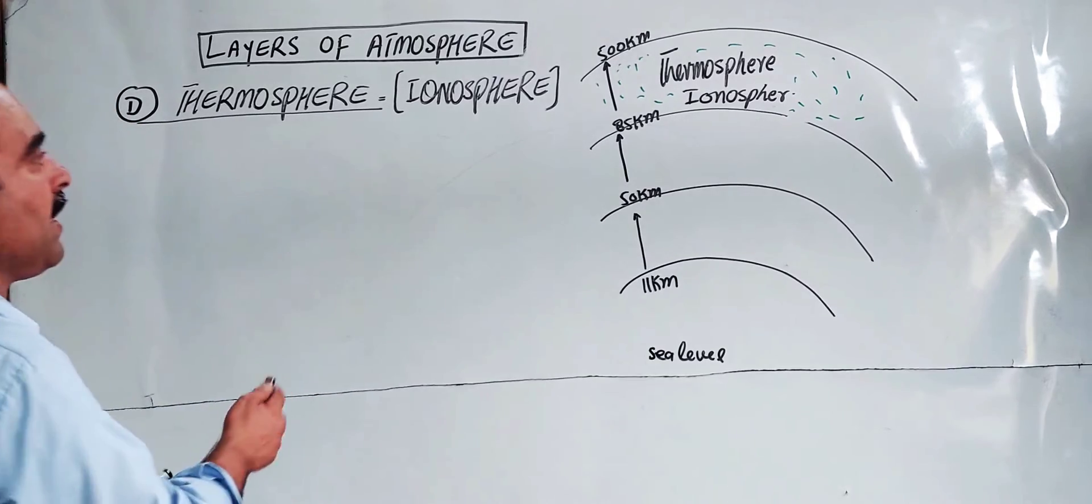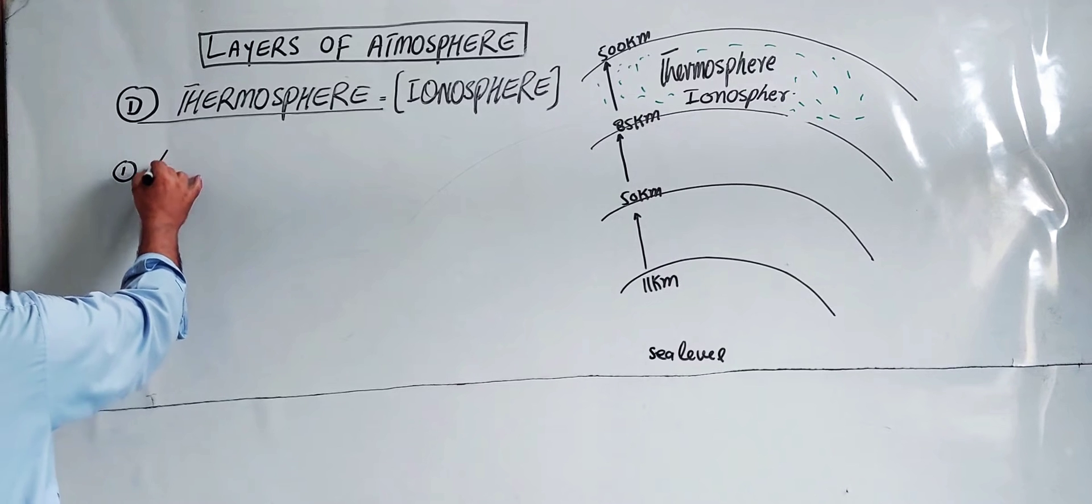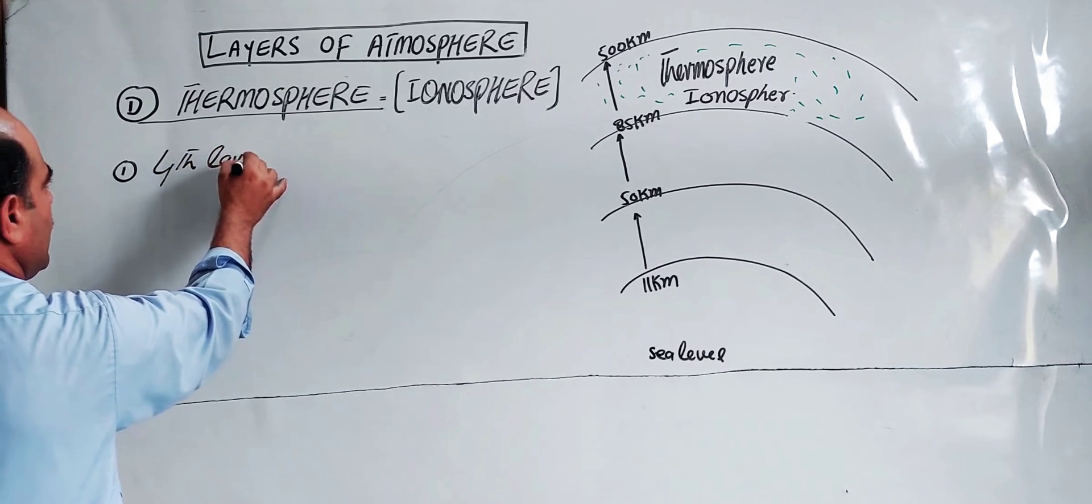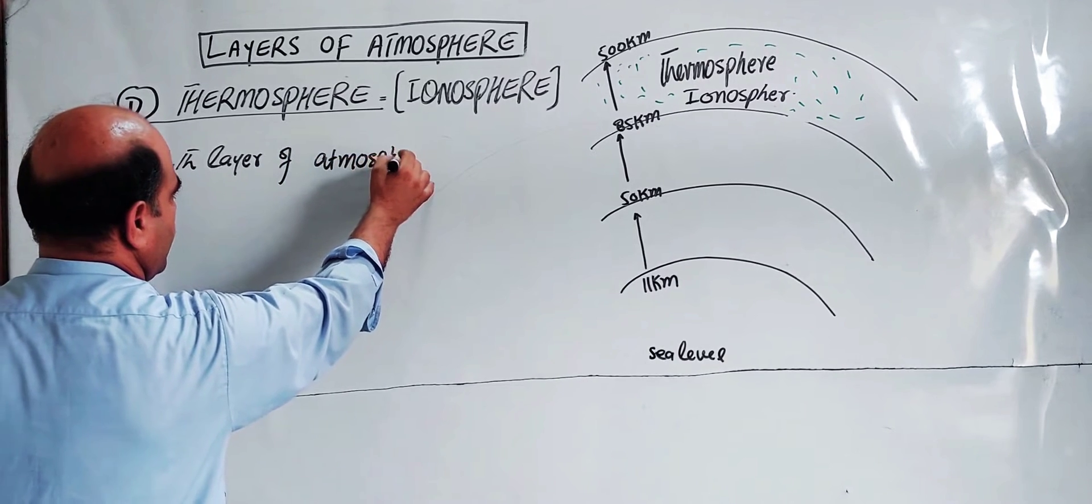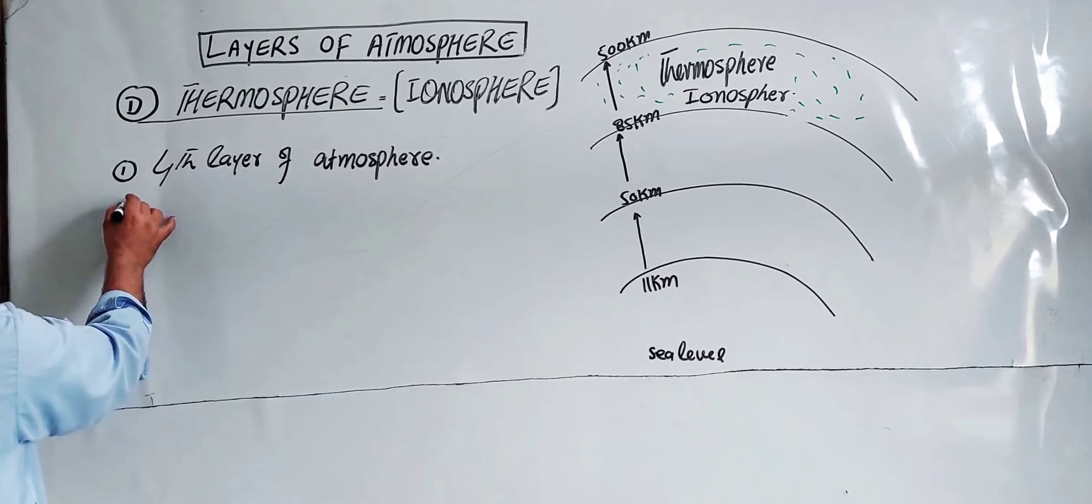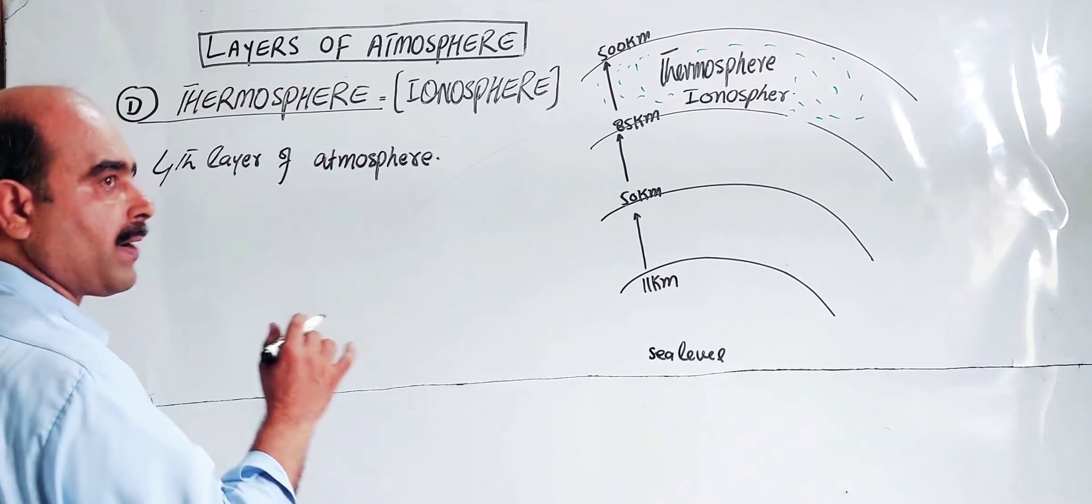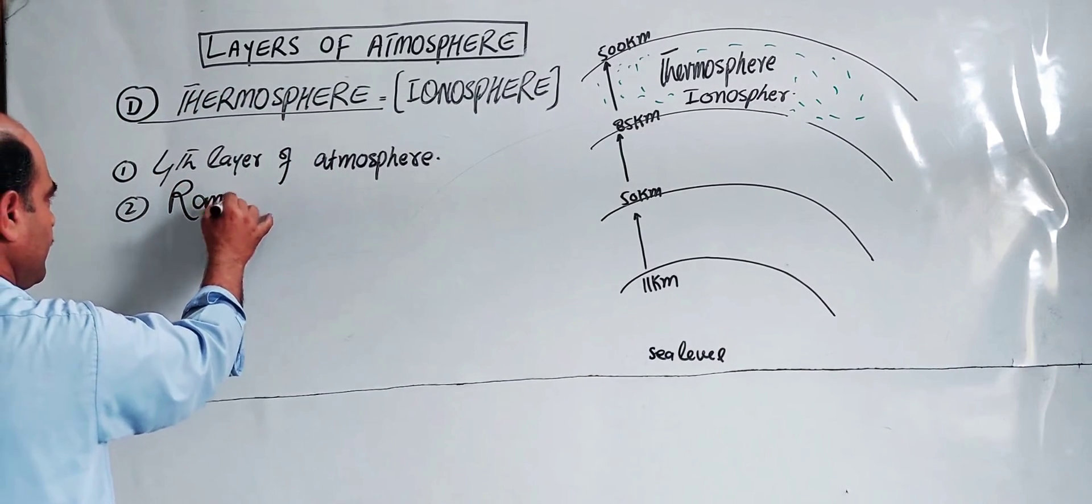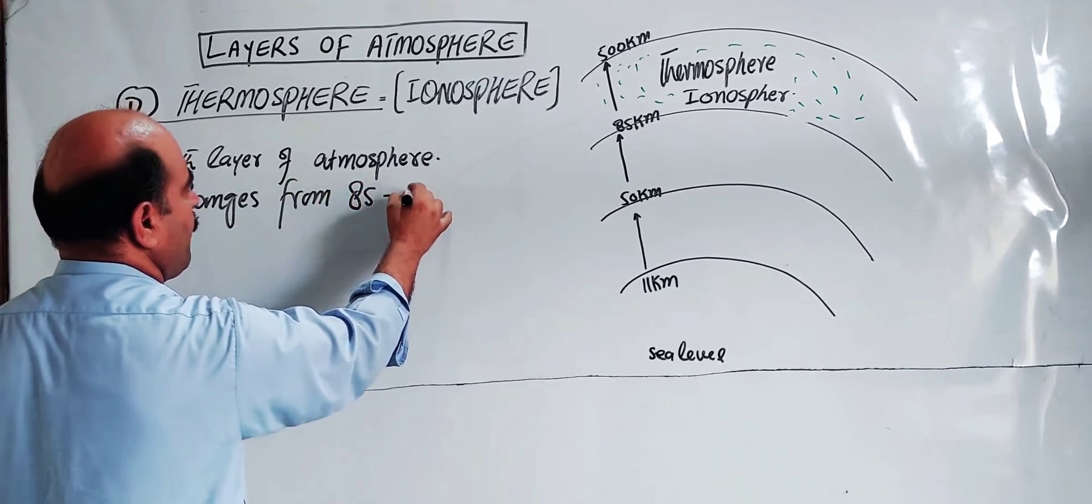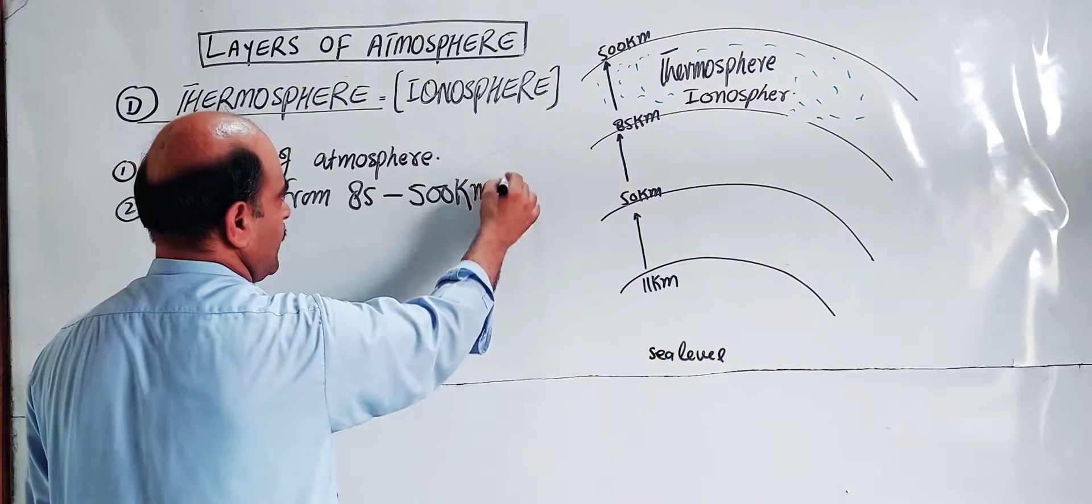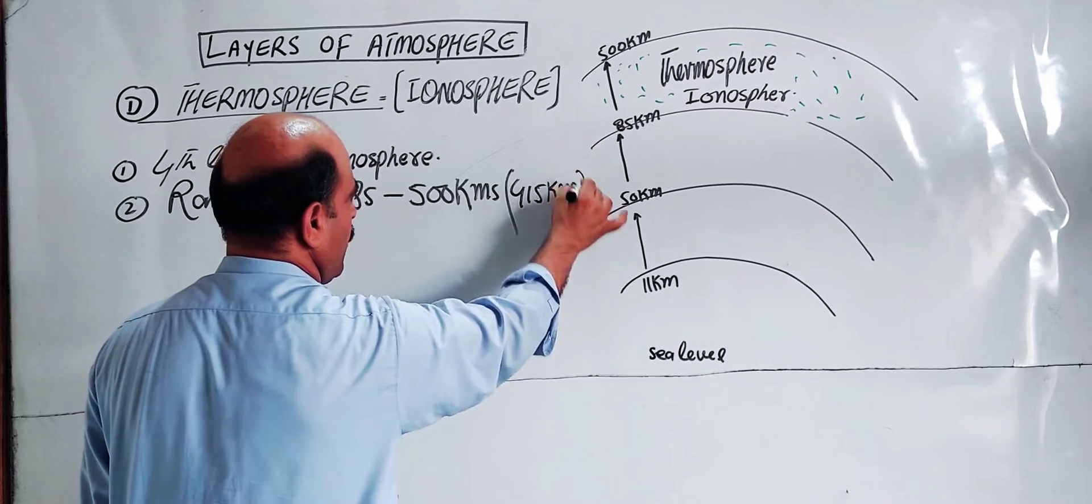The characteristics of thermosphere: First, it is the fourth layer or region of atmosphere. Second, it ranges from 85 to 500 km. The total range is 415 km.